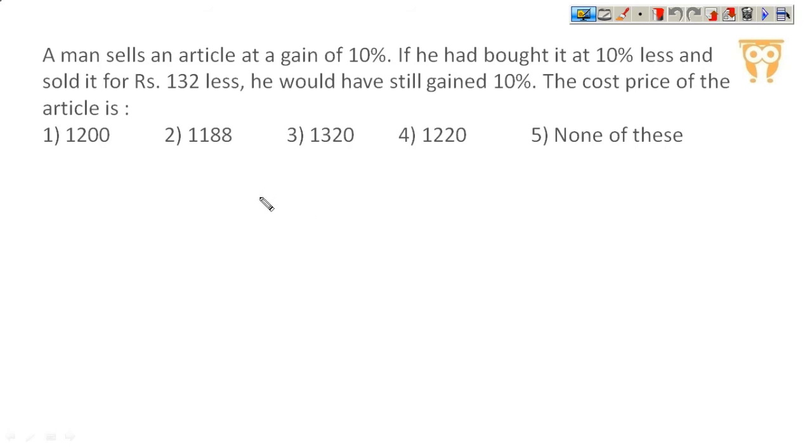A man sells an article at a gain of 10%. If he had bought it at 10% less and sold it for Rs. 132 less, he would have still gained 10%. The cost price of the article is? If the question has just percentages, it will be easy. If there is a value, we have to do this differently.